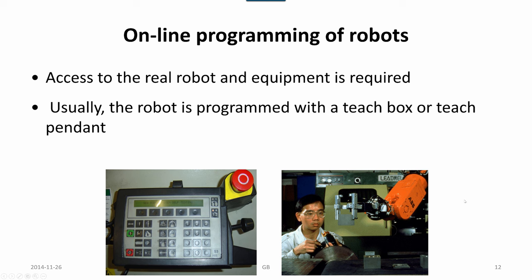We have access to the real robot and equipment is required. Usually the robot is programmed using some kind of teach box or teach pendant. Teach pendant means some buttons to activate and define instructions and some kind of, normally, joystick or buttons to move the robot around in the workspace. That also includes emergency stop buttons.